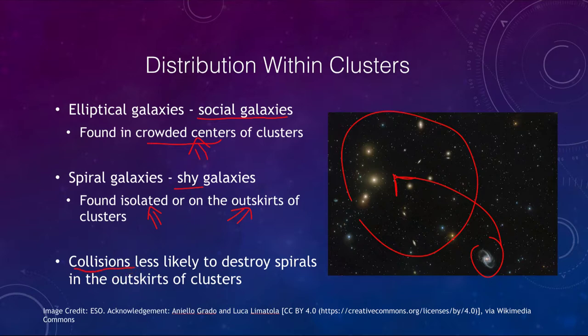We believe that is because collisions will destroy spiral galaxies. As galaxies cannibalize each other, spiral galaxies will be destroyed and incorporated into large elliptical galaxies. This is what is predicted to happen with our Milky Way and the Andromeda galaxy — they will eventually merge into an elliptical galaxy billions of years from now. In the outskirts of clusters, collisions are less likely, so spirals are able to hang on for a longer time.